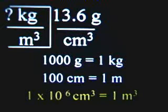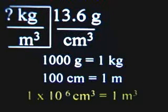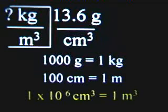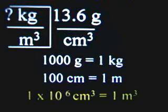Some equalities that are going to help us make these conversions: we'll have 1,000 grams is the equivalent of one kilogram. And to be able to change centimeters cubed into meters cubed, I'm going to need a volume equality. In order to obtain a volume equality, I'm going to use the length equality that 100 centimeters is equal to one meter, and I'm going to cube both sides. To create a volume equality, you need to take a length equality and cube both sides — both the unit and the number.